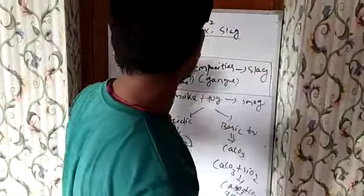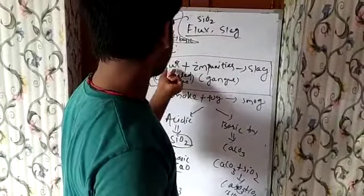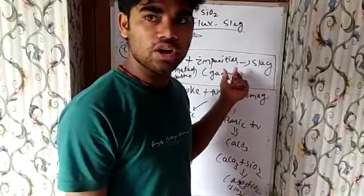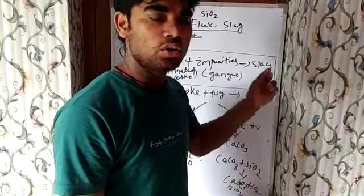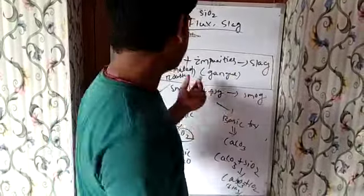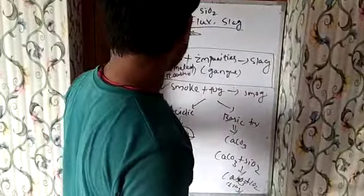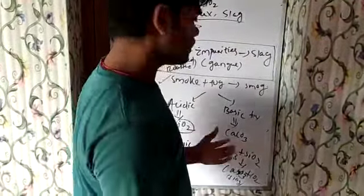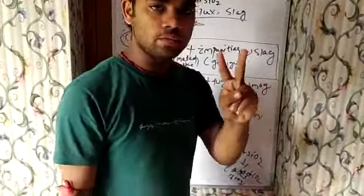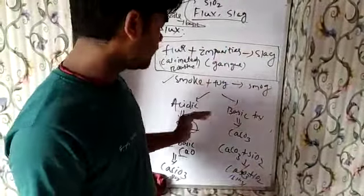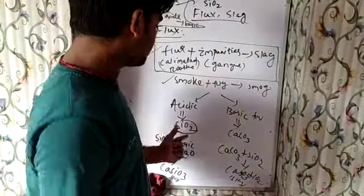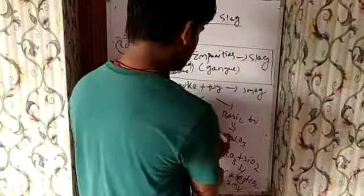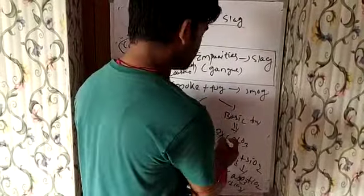Flux is a chemical substance that reacts with impurities or gangue particles to form slag. These flux are used with calcinated and roasted ore. There are two types: one is acidic flux, example SiO2 (silicon dioxide), and one is basic flux, example CaCO3 (calcium carbonate).